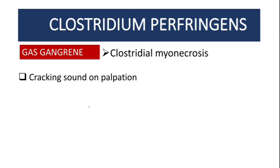The first disease is gas gangrene, also known as clostridial myonecrosis. On palpation, you can hear a cracking sound because through its metabolism, this bacteria releases gases like carbon dioxide, methane, etc. Under the skin, there will be an accumulation of gas.